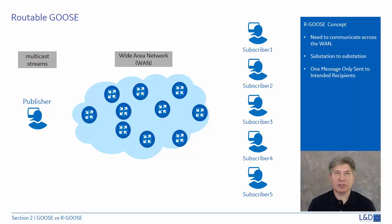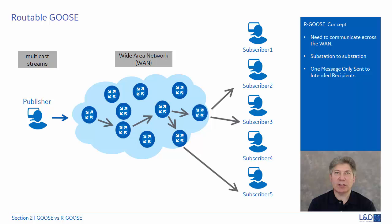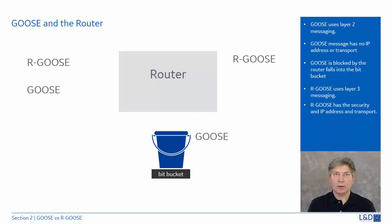The Routable GOOSE concept was created for substation-to-substation communications across the wide area network. Previously, standard GOOSE used a broadcast approach to everyone. In the Routable GOOSE, the message uses a multicast approach on a wide area network and only sends a message to intended recipients. Based on this, a security issue was raised — the Routable GOOSE will need to implement a security component to authorize and authenticate those recipients.